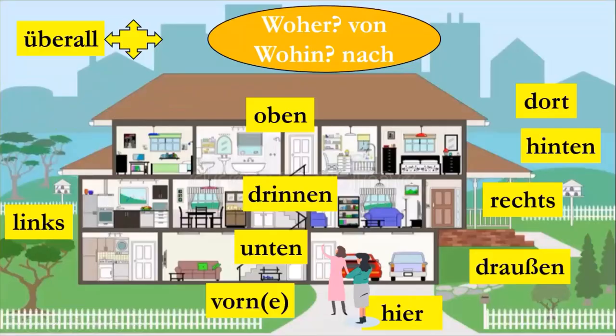So that was all for today. Do stay updated for part two of this tutorial, in which I will show you how to use these locative adverbs to show movement or direction, using two prepositions: 'von,' which means 'from,' and 'nach,' which means 'to.' Thank you!